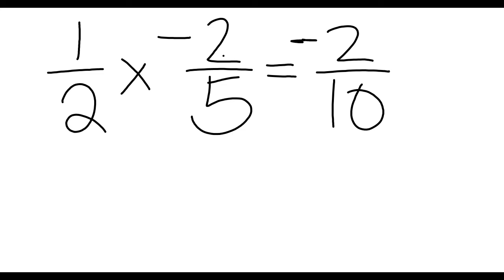Again, I kind of boil that down to just one rule. If there's one negative, the answer is negative. All right, this can be simplified. Both the top and bottom can be divided by 2, which would be equal to negative 1 fifth.